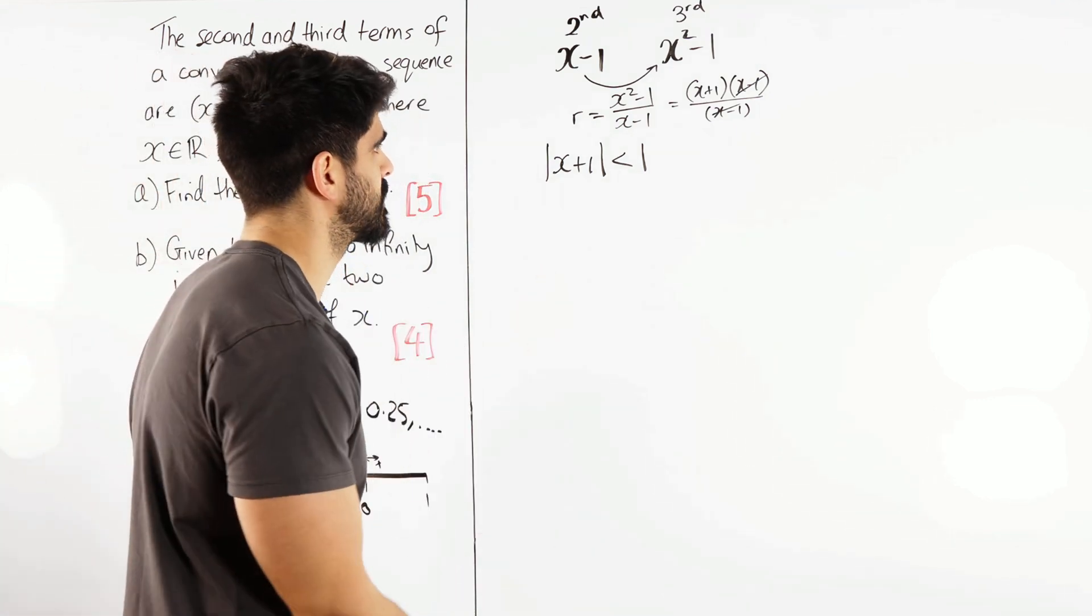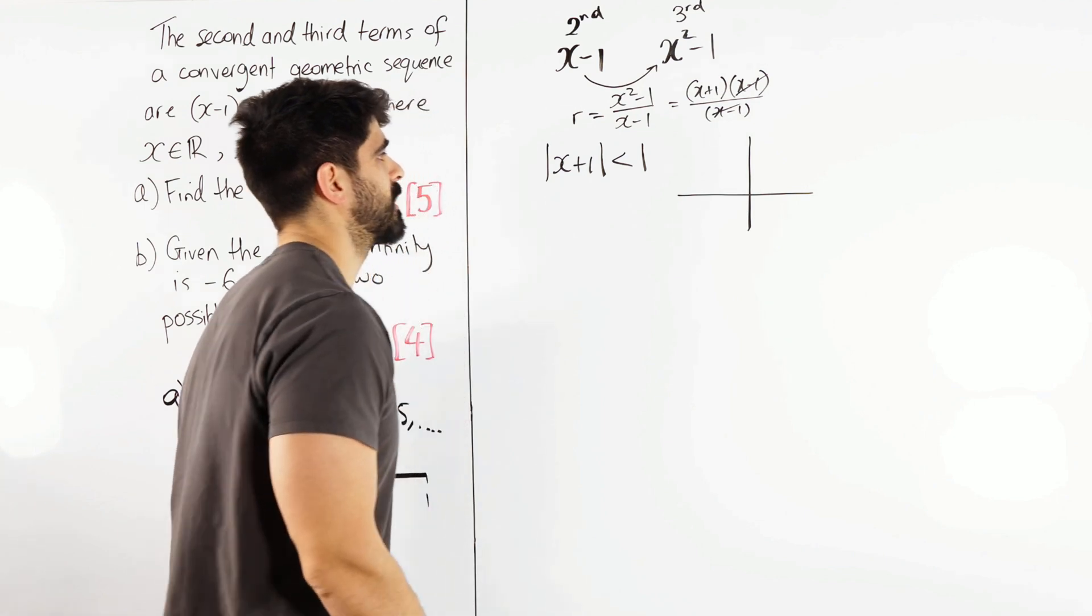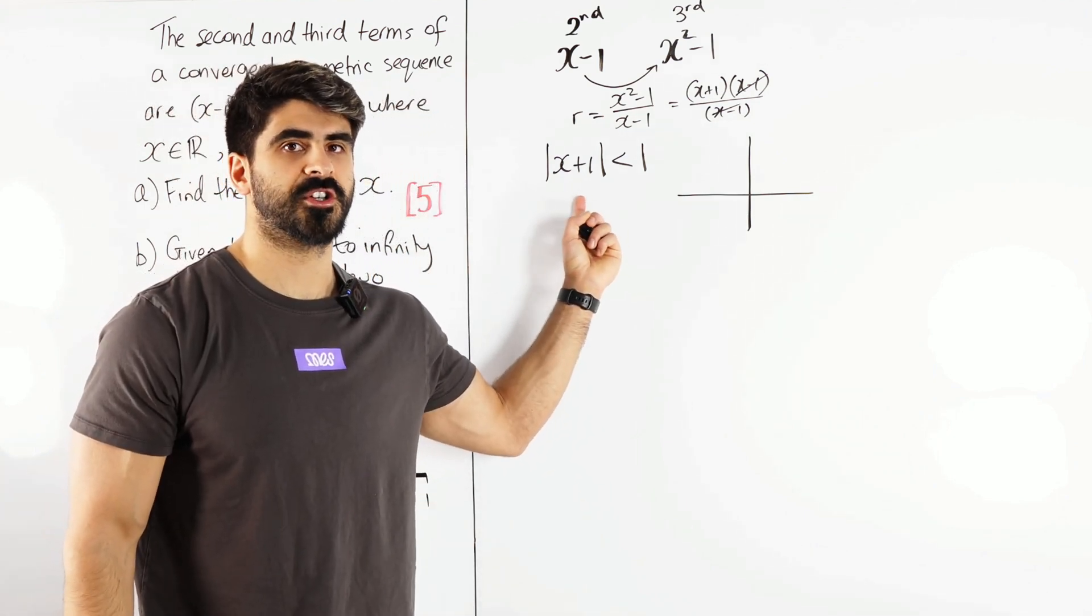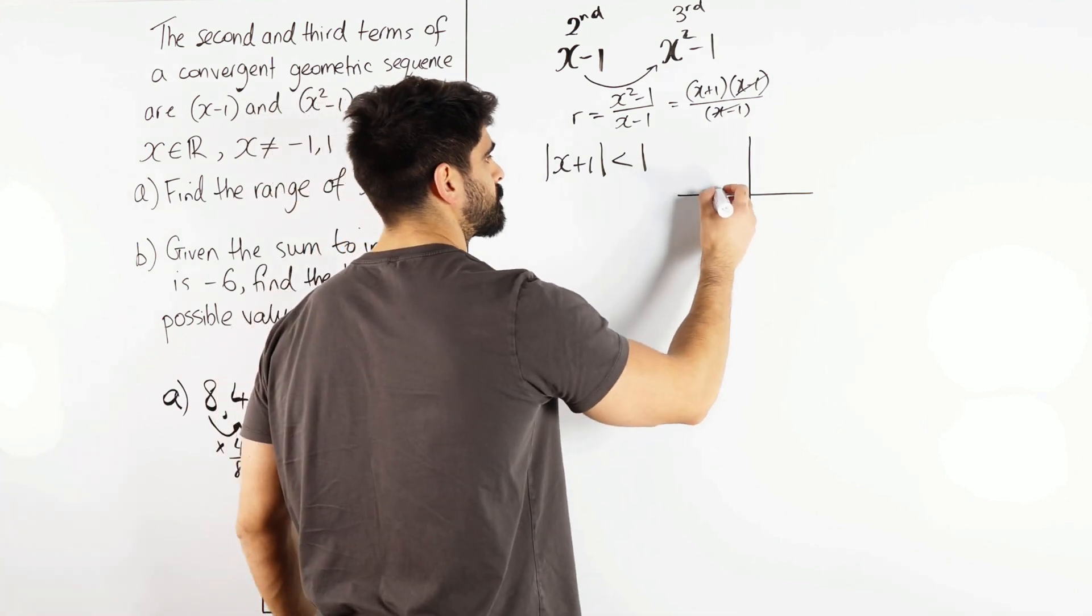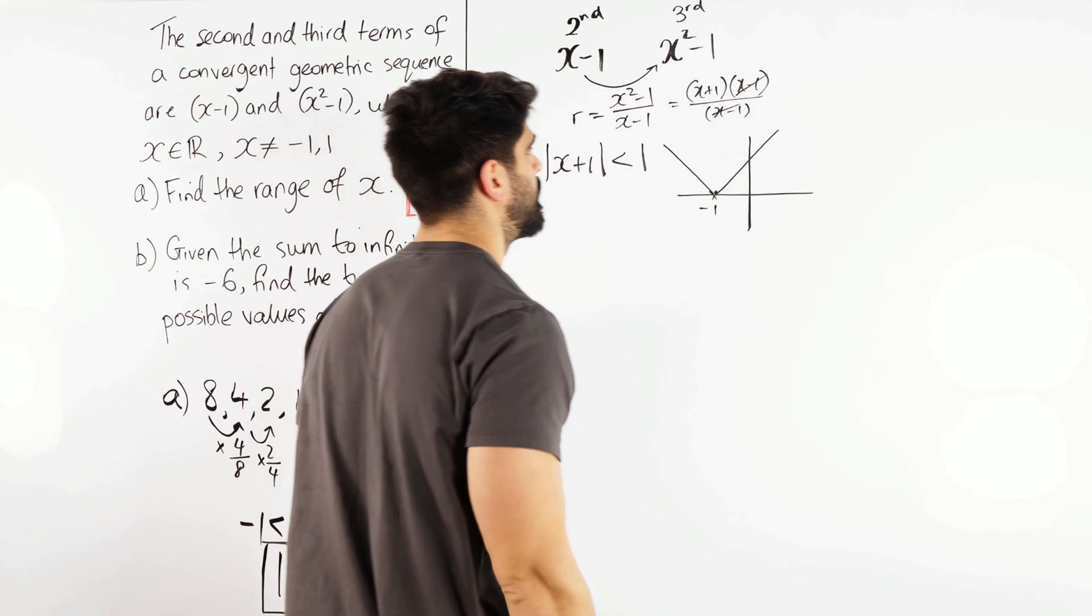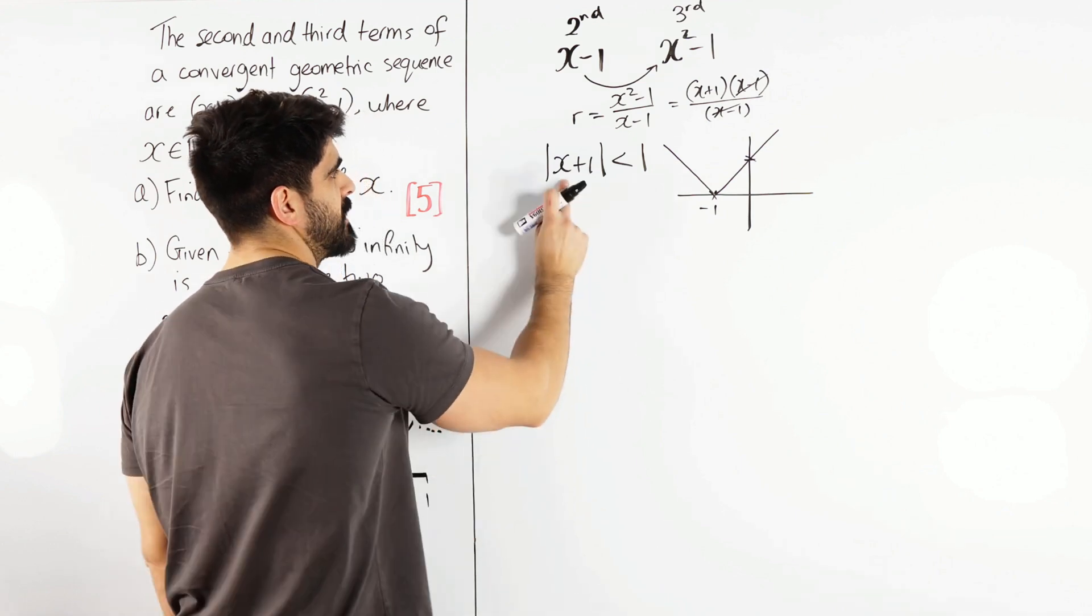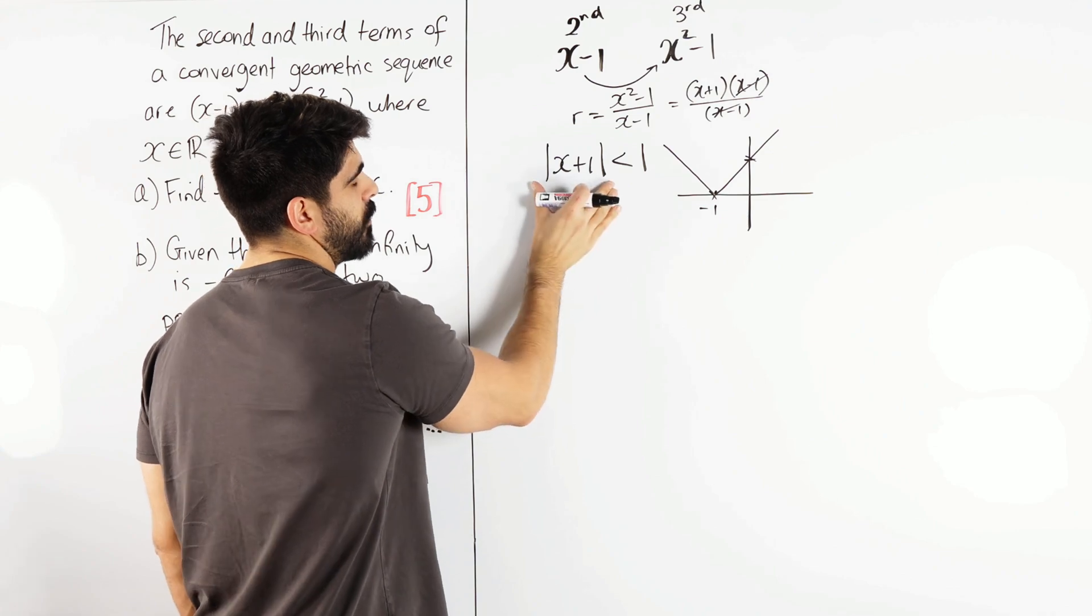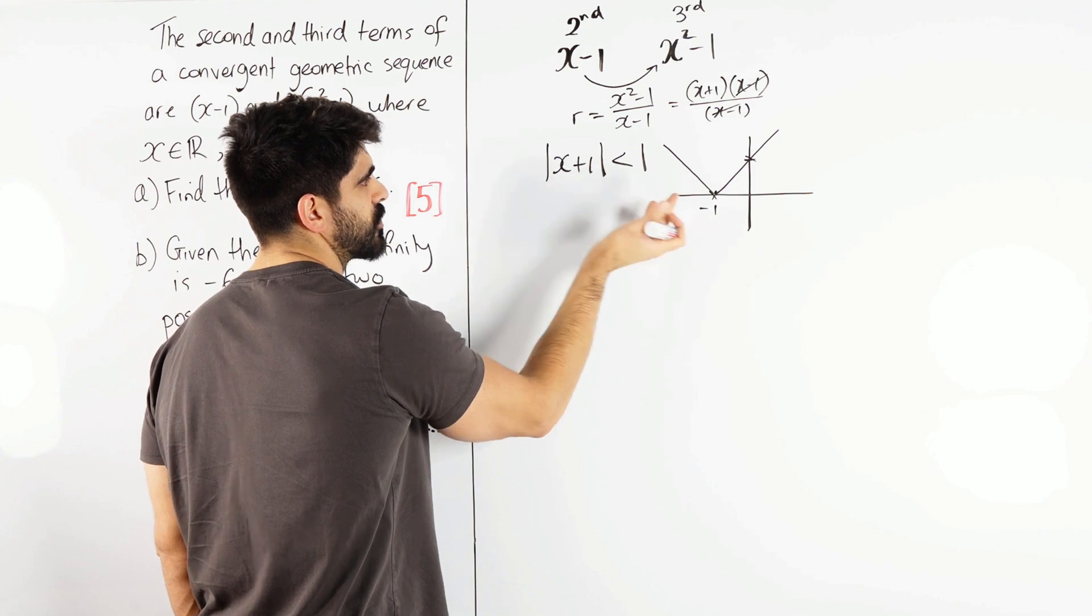So the modulus of that has to be less than 1. So we're actually solving modulus functions here, which is quite a unique question. Now how did I show you guys to solve modulus functions? You need to do a sketch. So let's do a quick sketch. How did I very quickly explain to you how we find the vertex? You just make what's inside the modulus equals 0, just like you do with completing the square. That's when x is minus 1. Then you get that v-shape. Then you can work out where it crosses the y-axis by just making x equals 0.